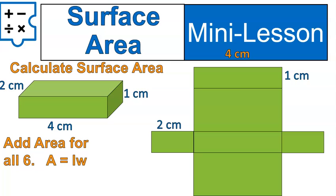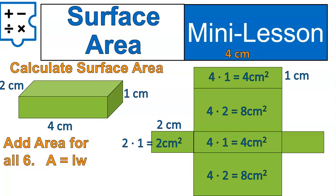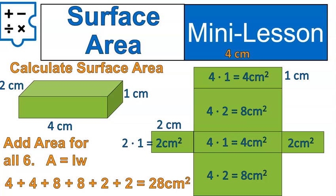Area for a rectangle is length times width. Starting with the rectangle at the very top, it would be four times one, which gives us four square centimeters. That's the same as this one — those are the front and back. Then we have the top and bottom, which would be four times two, which is eight square centimeters. Then we have the sides, which are two times one, which is two square centimeters each. Now we need to add up those areas: four plus four plus eight plus eight plus two plus two gives us the total surface area covering that entire rectangular prism.